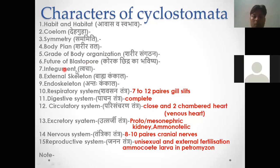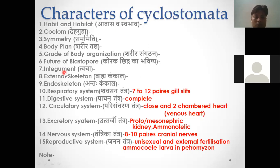If we talk about the integument, the skin is multi-layered. Mucous glands are present, and the covering inside the skin is mucus — it is slimy. There are no external scales. There are blood vessels on their body. The endoskeleton is cartilaginous.